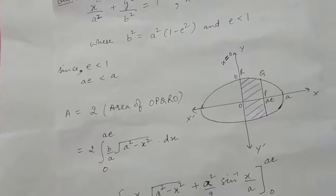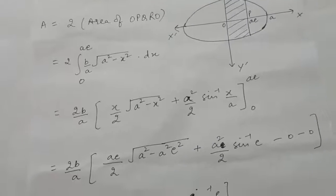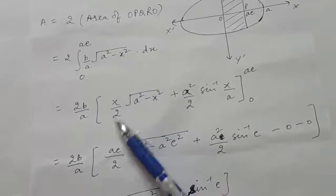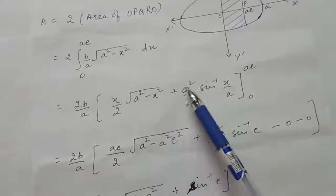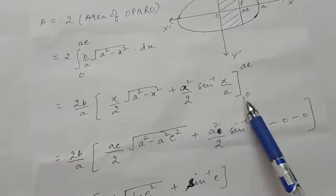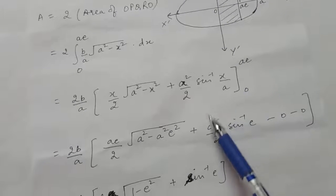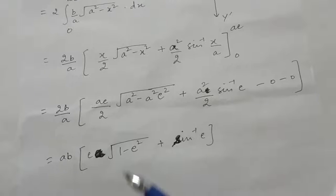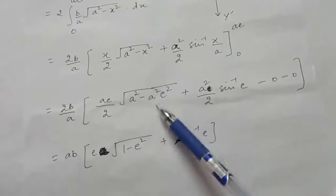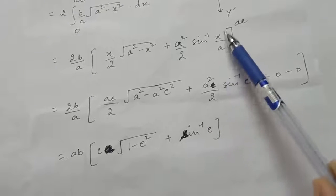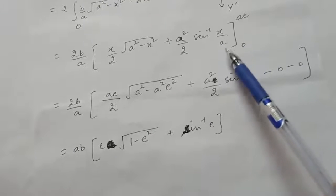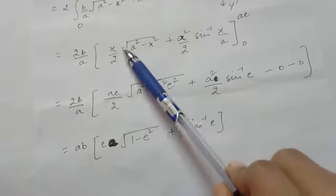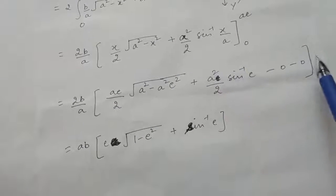Taking the constant common: (2b/a) × integral of √(a² − x²), which equals x/2 × √(a² − x²) + (a²/2) sin⁻¹(x/a), with limits from 0 to ae. Putting x = ae: you get ae/2 × √(a² − a²e²) + (a²/2) × sin⁻¹(e). Putting x = 0: both terms become 0, and sin⁻¹(0) = 0.